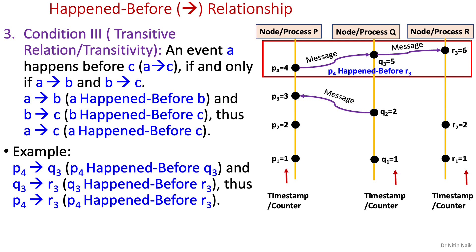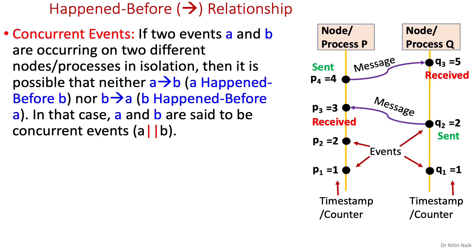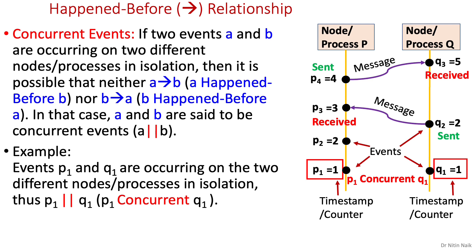The happened-before relationship is useful in determining a partial ordering of events in logical clocks. Now let's look at when we cannot establish happened-before relationship between events, meaning that events are concurrent. If two events A and B are occurring on two different nodes or processes in isolation — meaning they don't exchange messages — then it is possible that neither A happened before B nor B happened before A. In that case, A and B are said to be concurrent events. For example, P1 and Q1 events are occurring on two different nodes in isolation, neither exchanging a message nor satisfying any happened-before conditions. Thus P1 and Q1 are concurrent events. Note: concurrent events are not necessarily happening at the same time; it simply means nothing can be said about which event happened first.